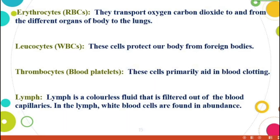Erythrocytes (RBC) transport oxygen and carbon dioxide to and from the different organs of the body to the lungs. The lungs handle the intake of oxygen and release of carbon dioxide. Leukocytes (WBC) protect the body from foreign bodies — very important cells, acting against pathogens, killing them. Thrombocytes or blood platelets are primarily used in blood clotting.